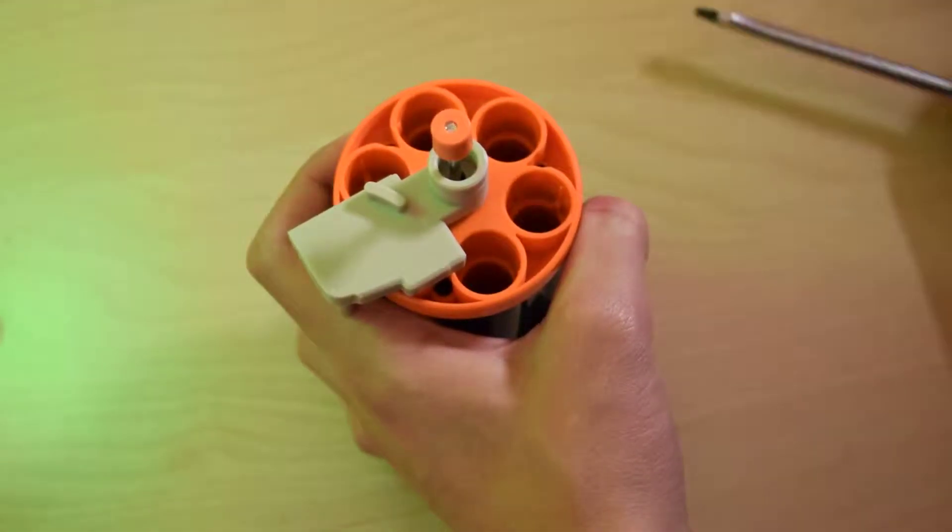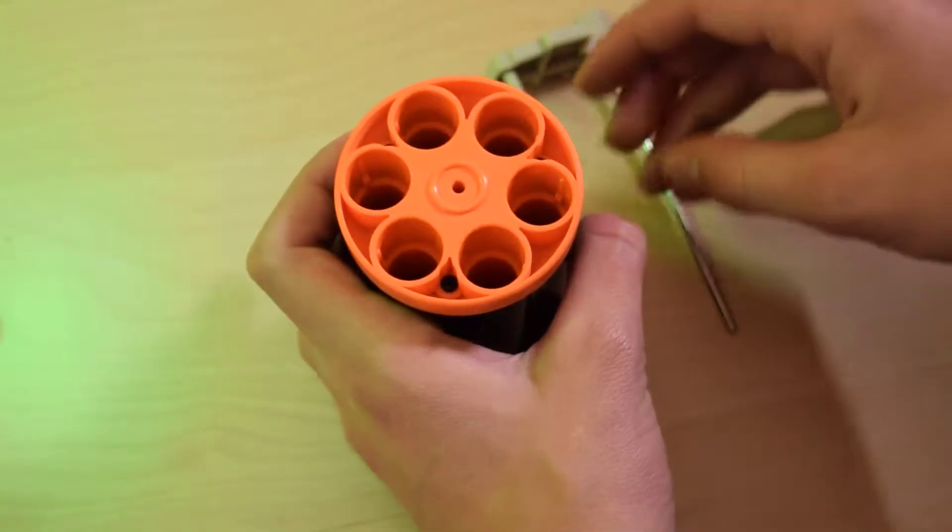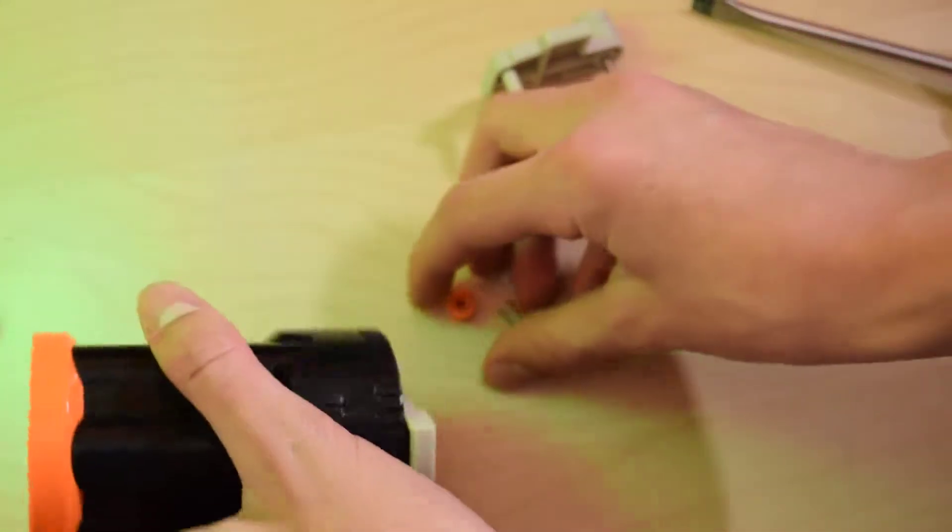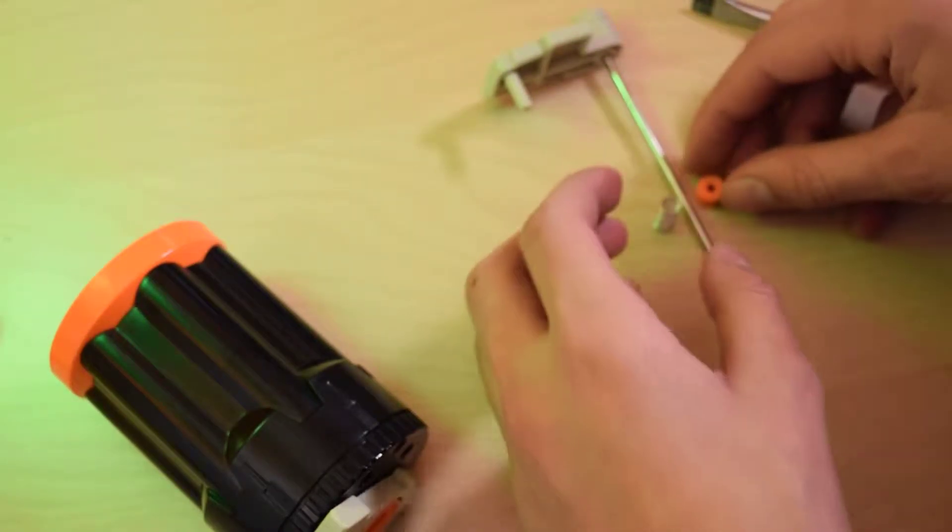On this blaster it was pretty easy, but on some it can be really hard to take out. So just pull that out and set it off to the side. And now when you lift this up, you can see there's the spring and little plastic piece I was talking about. You can set those off to the side as well.